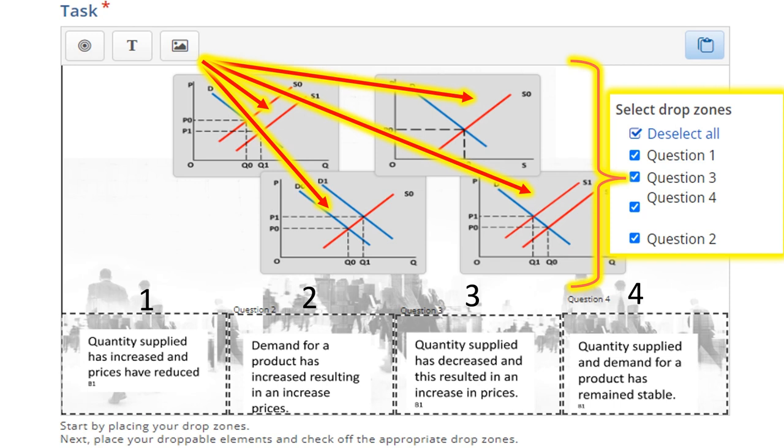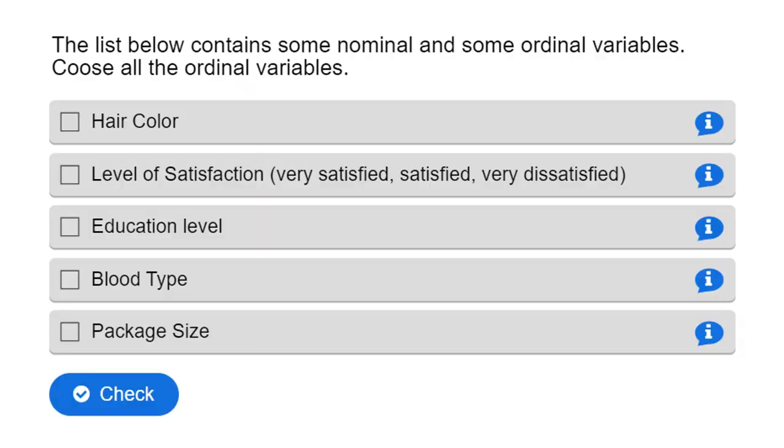It's crucial to permit users to place the elements in incorrect locations. That's akin to distractors in multiple choice questions. Allowing for the selection of wrong answers provides valuable insights into areas where learners may need further understanding or clarification through your feedback, automated or alive.